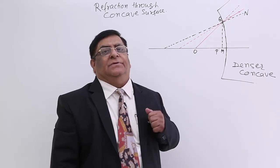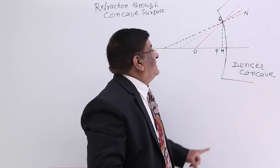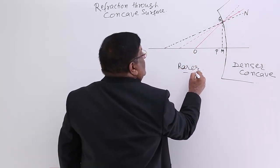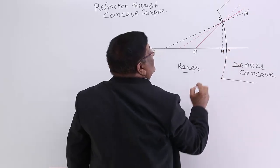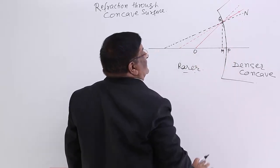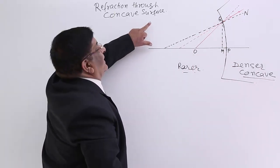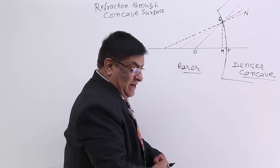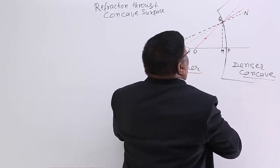Now here we take another case of refraction where the curved surface is a concave surface. This is the denser part and this part is the rarer part. In the denser part, the middle point is pressed inside. This is the pole and the sides are up — this is a concave surface. The object is placed in the rarer medium and the rays are travelling towards the concave surface, and we are observing from this side.